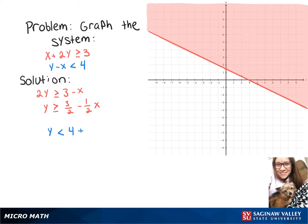All we have to do is add x over to give us y is less than 4 plus x. So we're going to graph that the same way, but instead this one is going to be a dashed line because it's strictly less than.